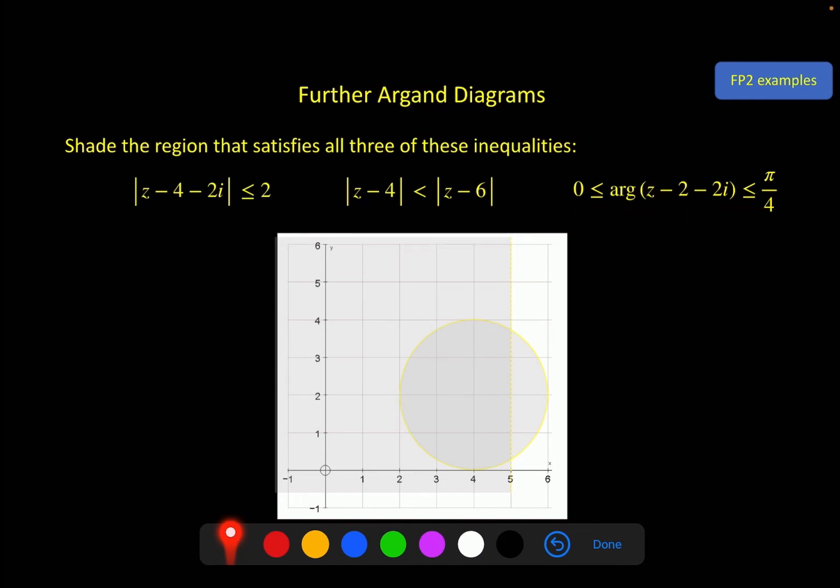And we also had this one, which looked like this. Putting all three together where all three are true is this region here. So you could shade that in a more obvious colour, like this. Or you could put on an R to show that this is the region. And if you really wanted to make it clear, you could go over that again. Just to outline it. So a couple more examples of this.